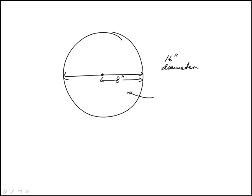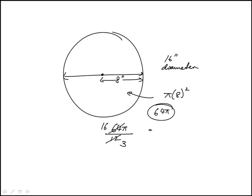The entire area of the pizza would be pi r squared, which is 64 pi. It's being divided into 12 equal slices, which means the area of each slice would be 64 pi over 12. I can reduce this — 4 times 3 is 12, and 64 divided by 4 is 16 — so the answer is 16 pi over 3. Answer choice A.